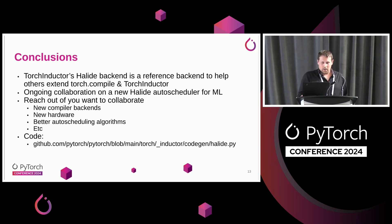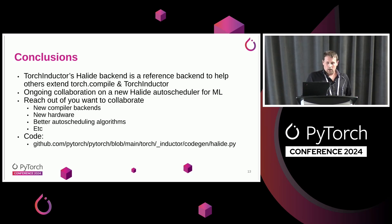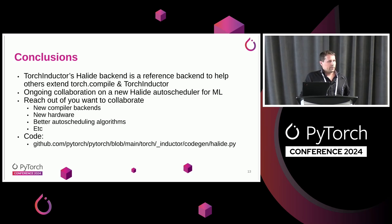To conclude: Torch Inductor's Halide backend is a reference backend designed to help others extend Torch Compile and Torch Inductor. We have an ongoing collaboration on a new Halide autoscheduler for machine learning workloads, and I'd love for people to reach out if they want to collaborate. Thank you very much.